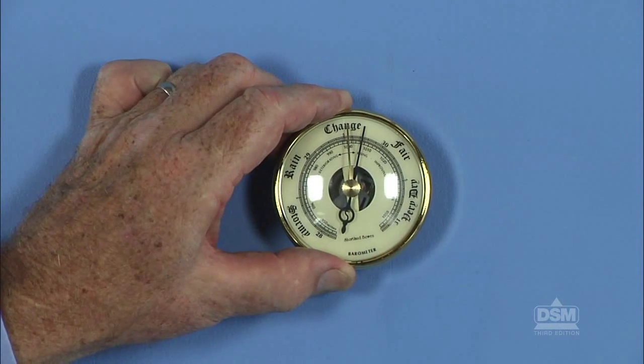Select a place in the classroom where the barometer can be hung or rested. Students should be able to read the barometer without disturbing it. Each team of two will need their weather station.